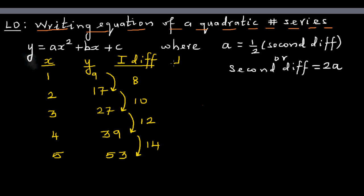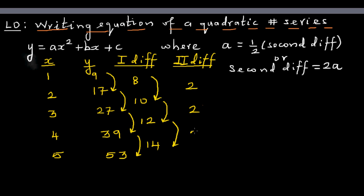The second difference is the difference of the first differences. Here, the second difference is 2, 2, and 2 — it's constant. Whenever the second difference is constant, you have a quadratic number pattern. Since the second difference is 2a and the second difference equals 2, we get 2a = 2, which means a = 1.